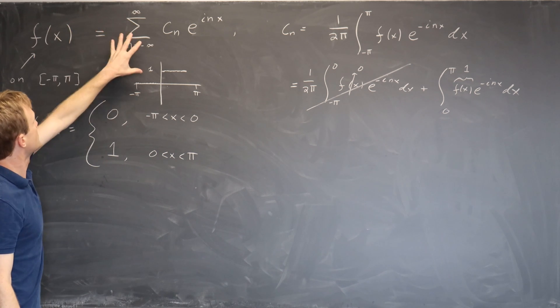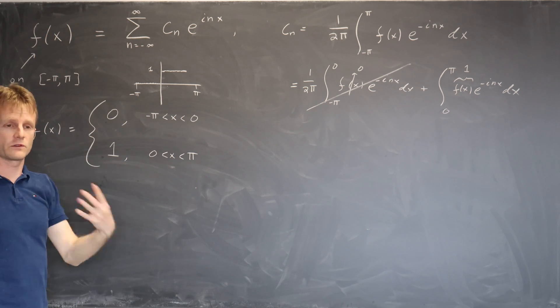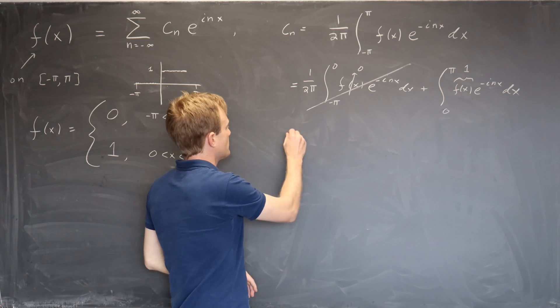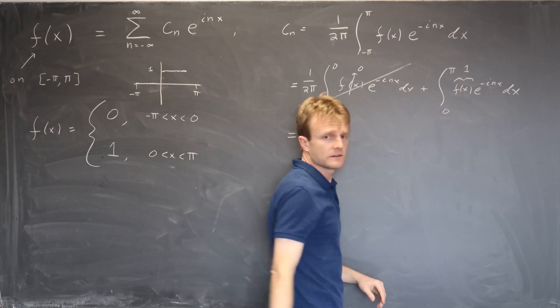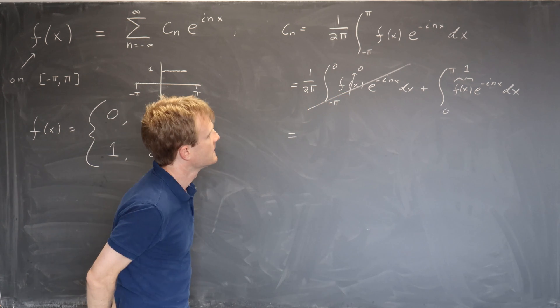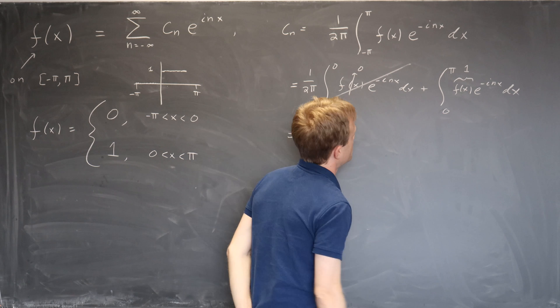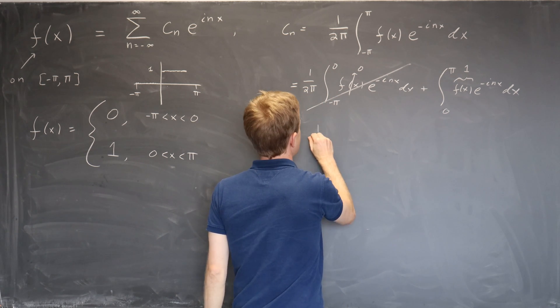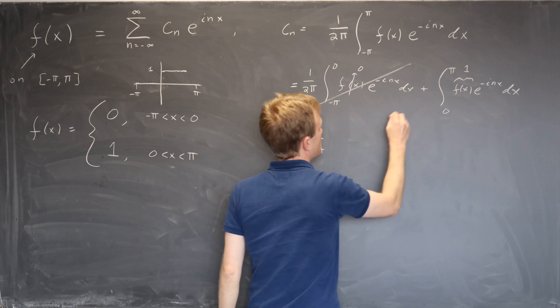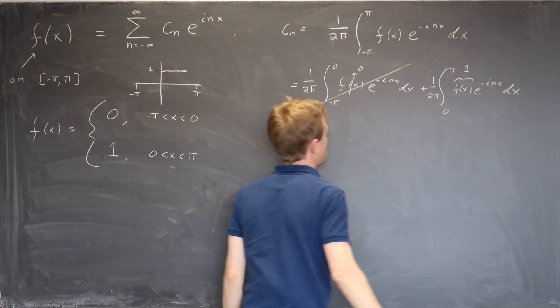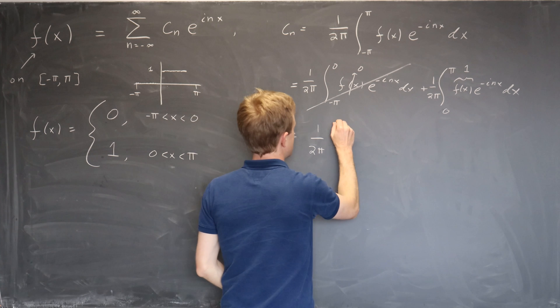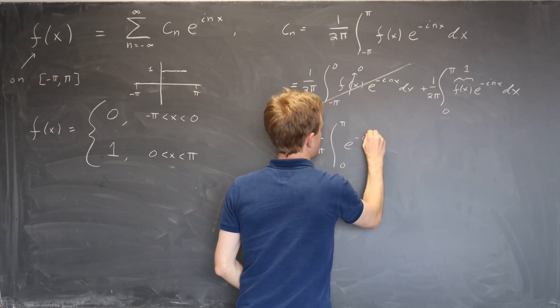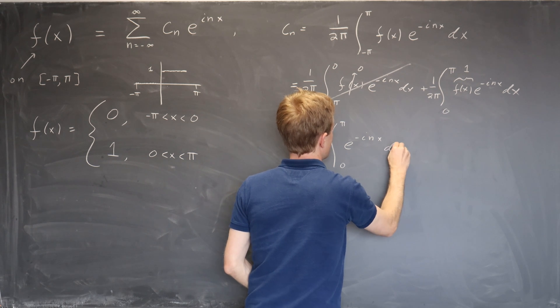The c_n doesn't care about it and the series doesn't care about it. The sense in which the series approximates the function there we'll talk about later. But for now we're just not going to worry about it. So all we have left over here is the second integral. The second integral says that we should integrate from 0 to pi, e to the minus inx dx.